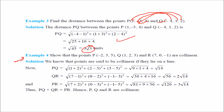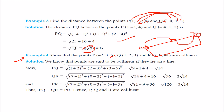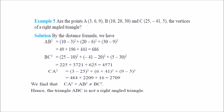How to check collinearity? Example 4 asks you to show that points P, Q, and R are collinear — meaning they lie on the same line. Using the distance formula, PQ = √14, QR = 2√14, and adding them gives PR = 3√14. Since PQ + QR = PR, the points P, Q, R are collinear.